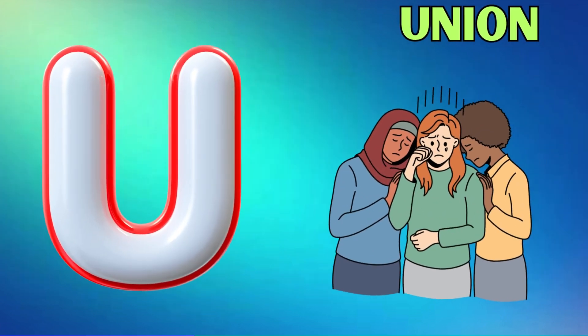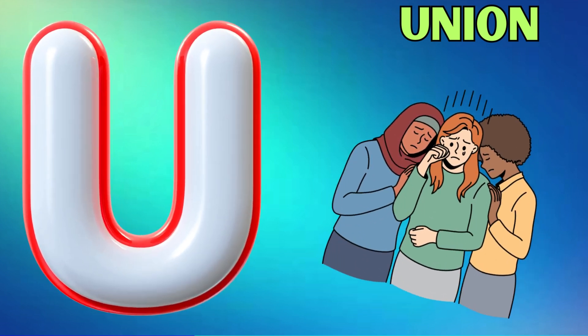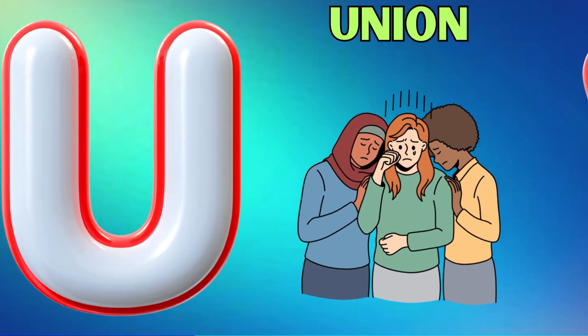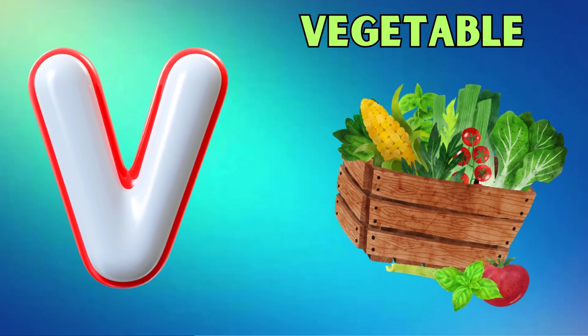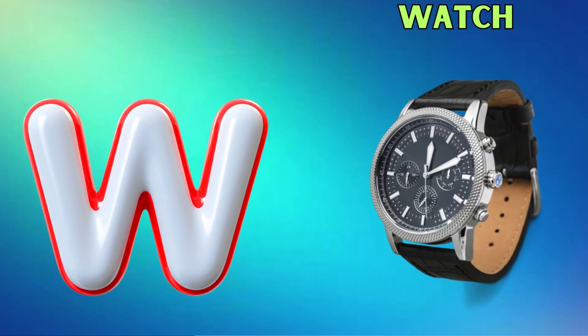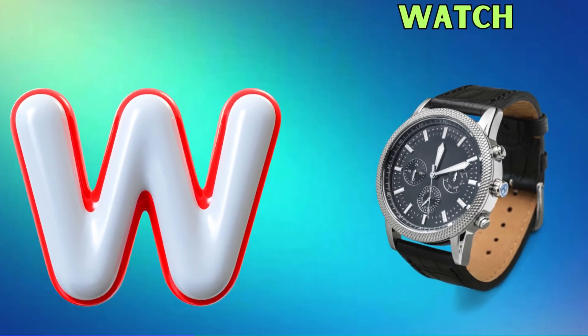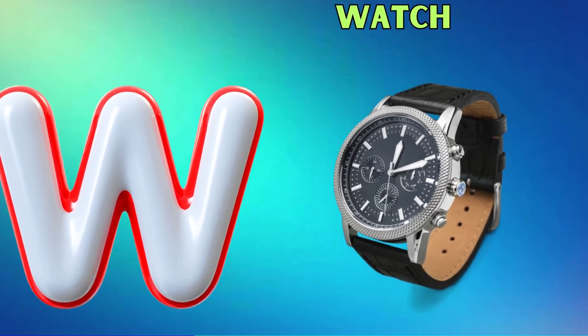U is for union, union. V is for vegetable, vegetable. W is for watch, watch.